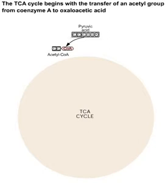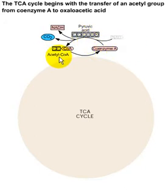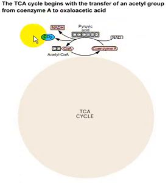Let's look at the TCA cycle. We know that the pyruvic acid produced will combine with coenzyme A to make acetyl coenzyme A. This process produces NADH and requires NAD+, and also releases a carbon dioxide molecule.